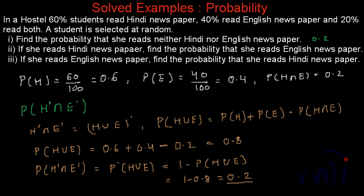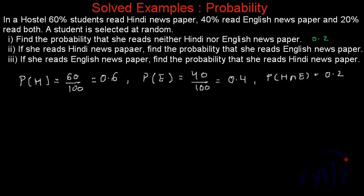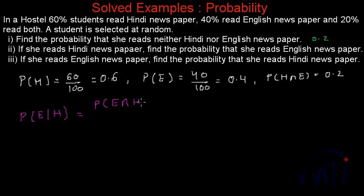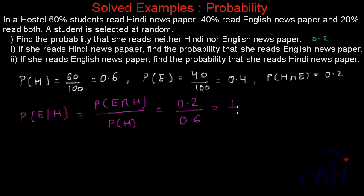Now for the second part: if she reads a Hindi newspaper, find the probability that she reads English newspaper also. That means we have to find the probability of event E given that H has already taken place, i.e., P(E|H) = P(E∩H) / P(H). P(E∩H) is 0.2 and P(H) is 0.6, so this equals 1 by 3.